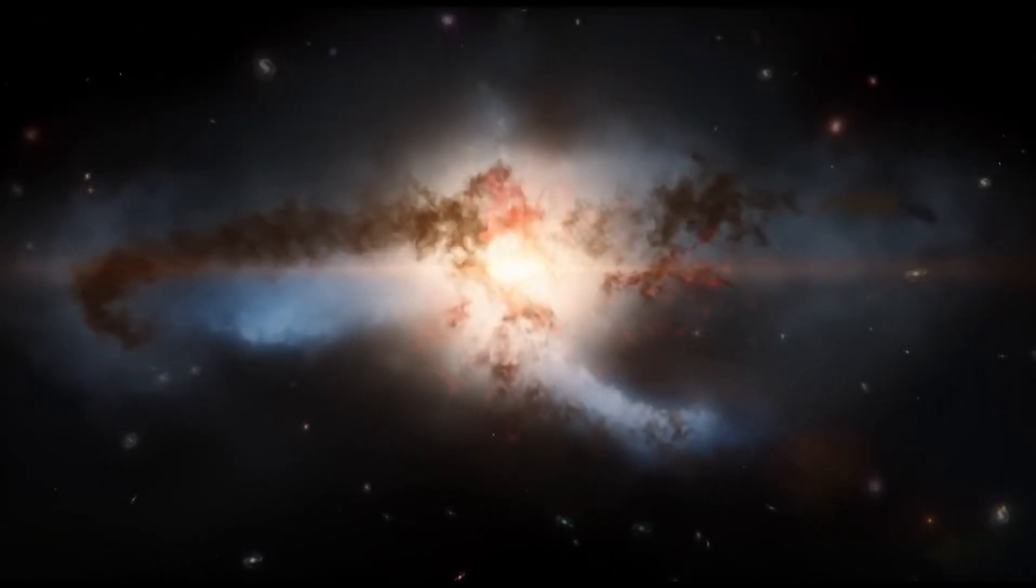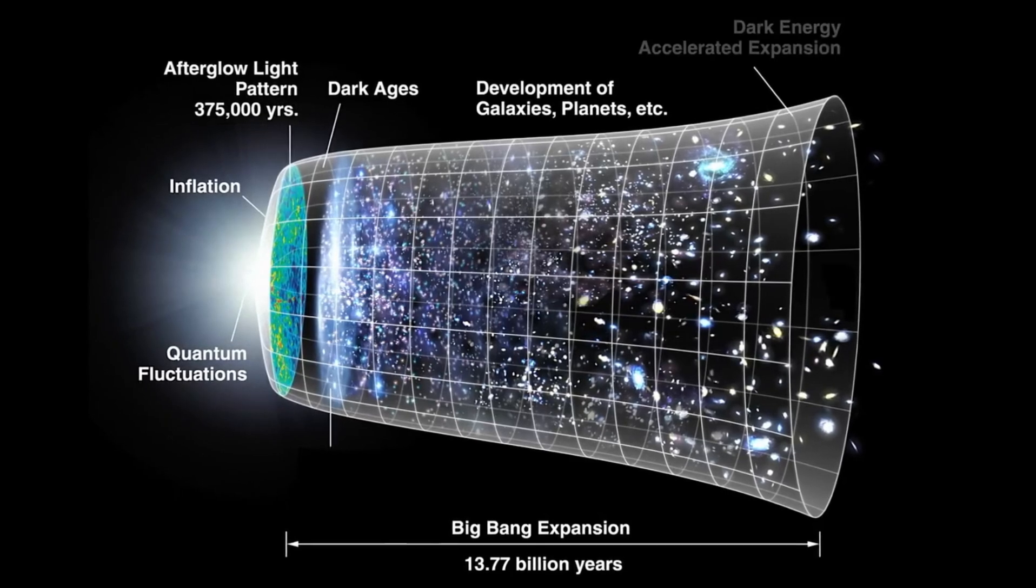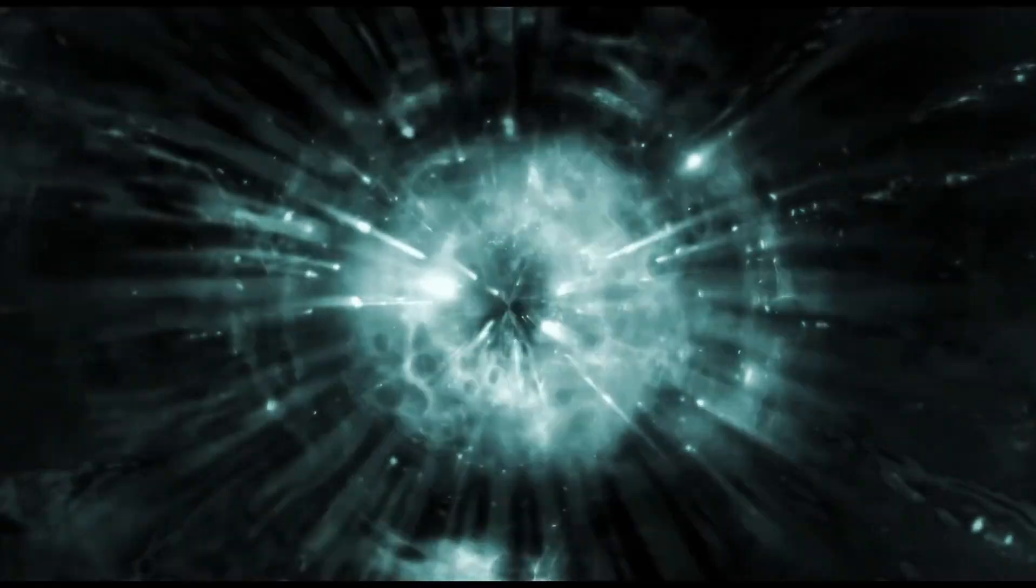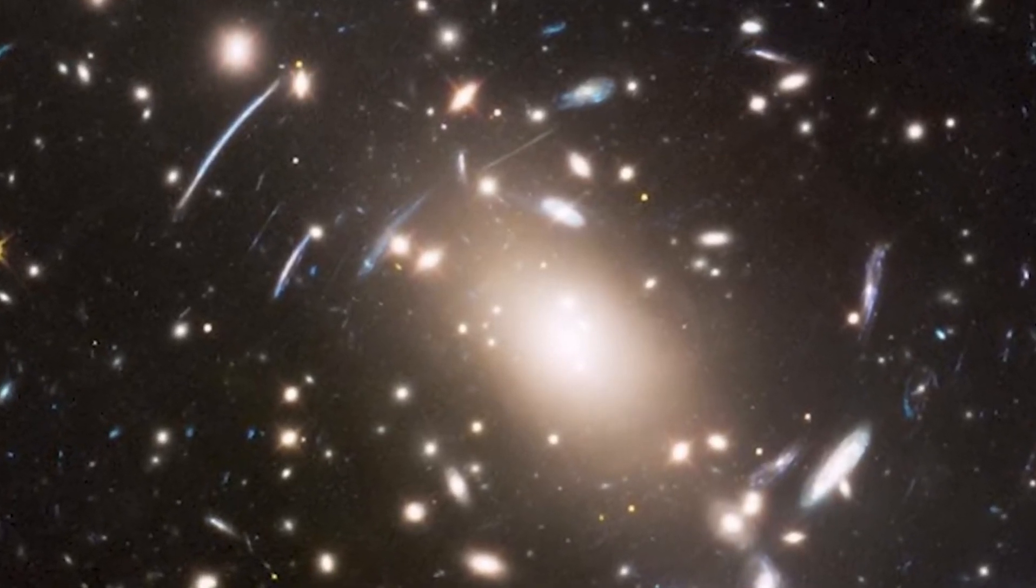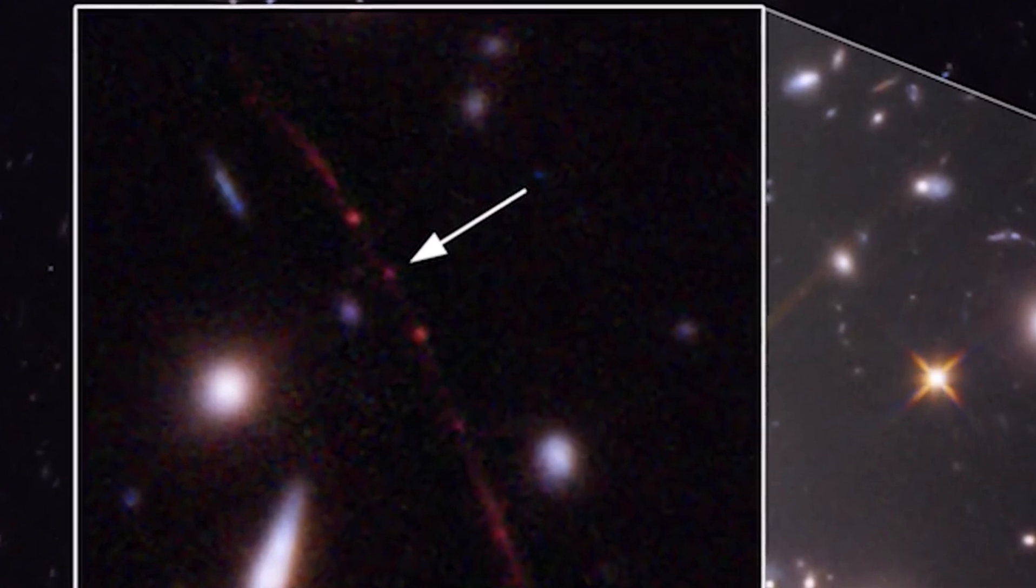However, perhaps instead, these halos were simply more efficient at drawing in regular matter to feed star formation. I think this is probably telling us something about how stars form in dark matter halos so early on, Penaruya says.